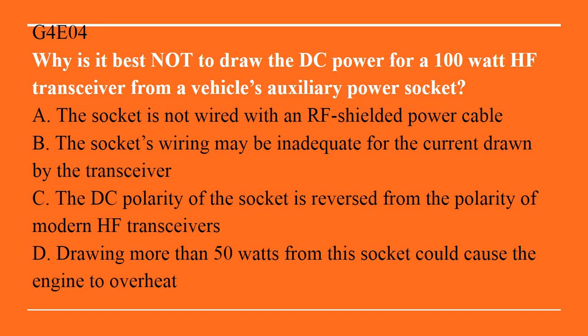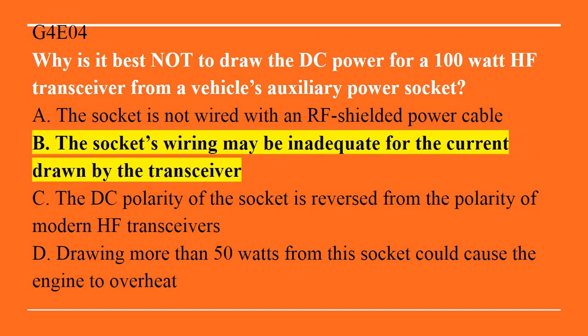G4E04: Why is it best not to draw the DC power for a 100 watt HF transceiver from a vehicle's auxiliary power socket? A. The socket is not wired with an RF shielded power cable. B. The socket's wiring may be inadequate for the current drawn by the transceiver. C. The DC polarity of the socket is reversed from the polarity of the modern HF transceiver. Or D. Drawing more than 50 watts from the socket could cause the engine to overheat. Answer is B. The socket's wiring may be inadequate for the current drawn by the transceiver.